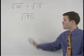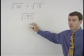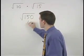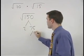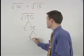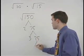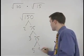Next, break down the square root that you end up with. 150 is 2 times 75, 75 is 3 times 25, and 25 is 5 times 5.